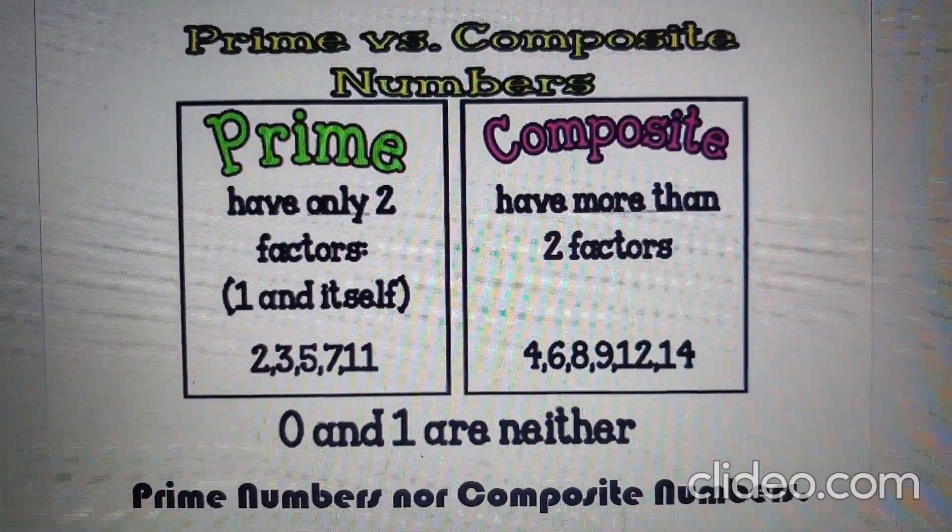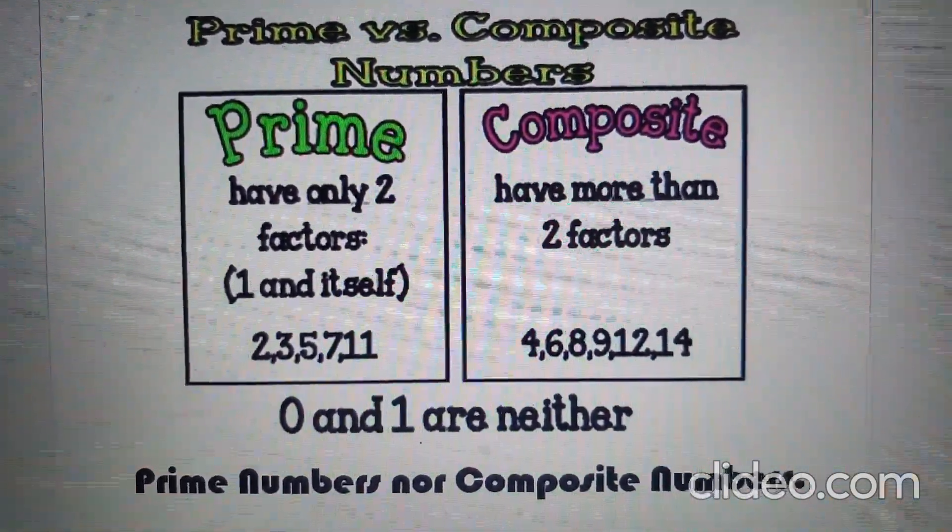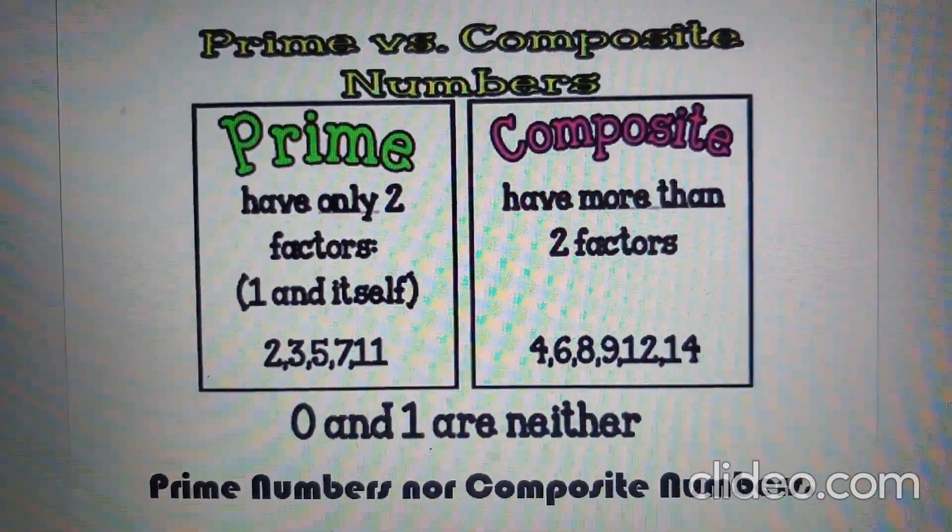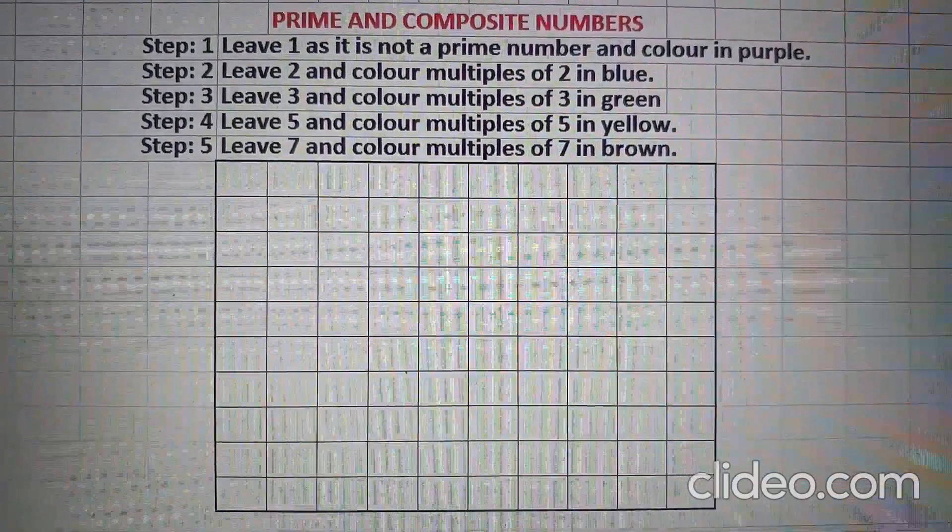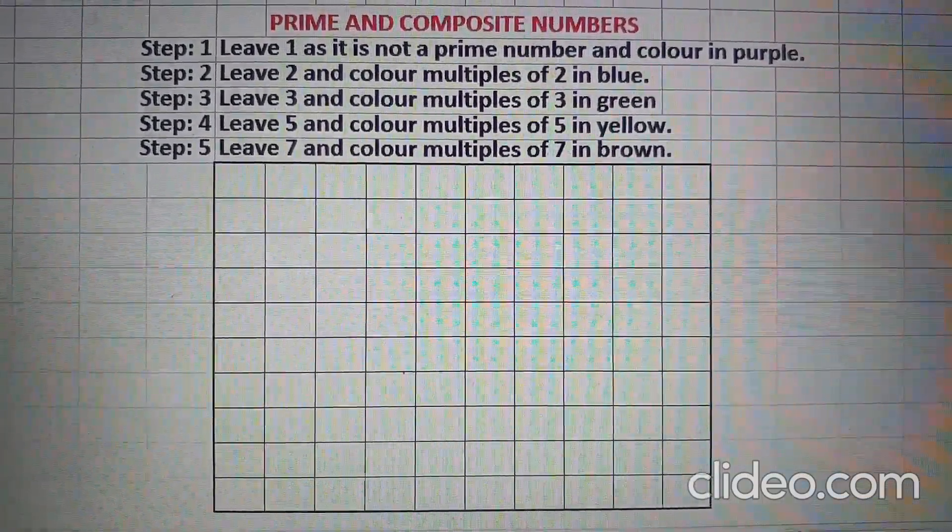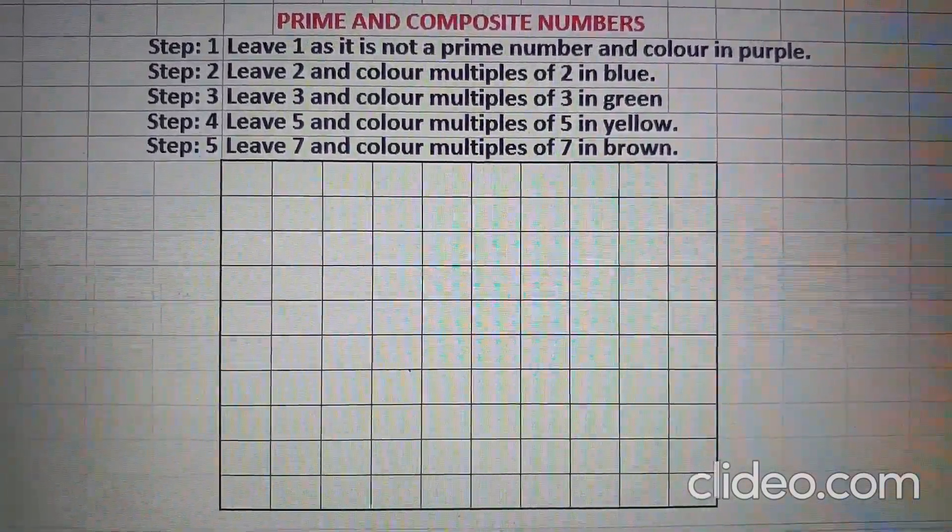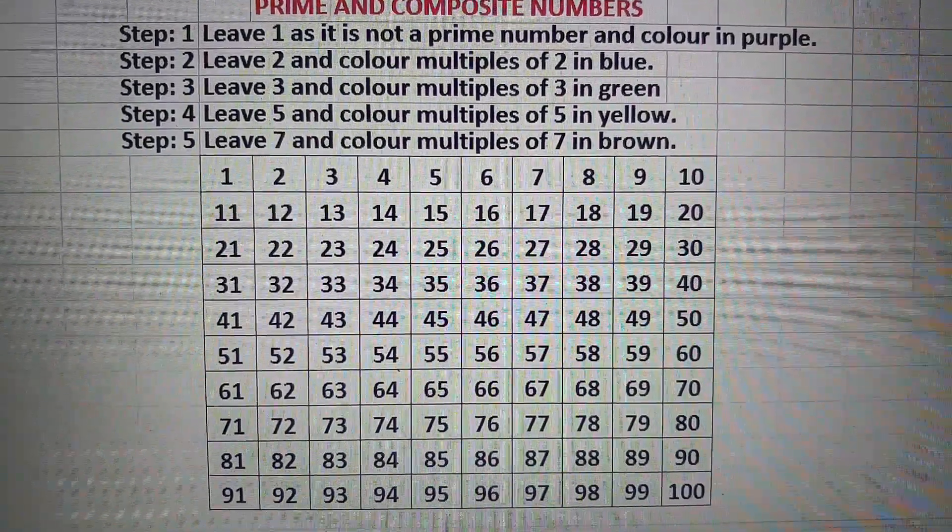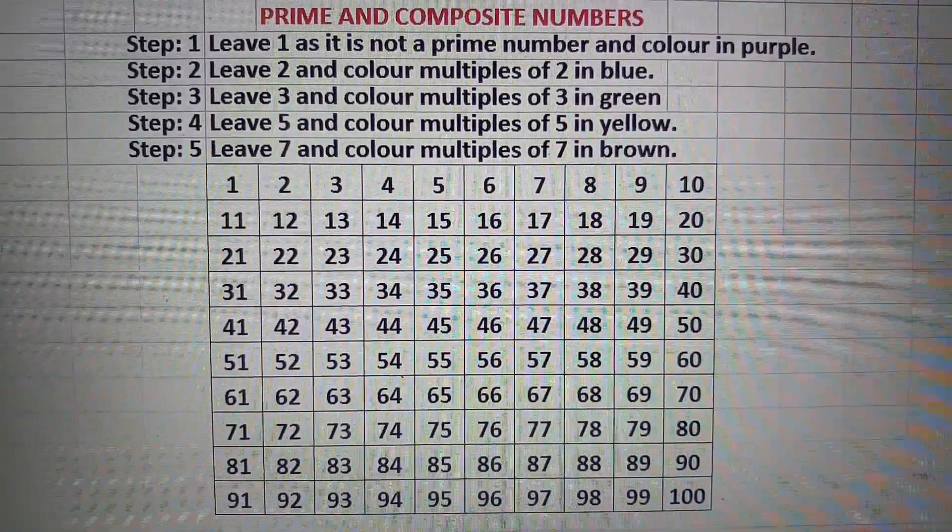We have learned that prime numbers have only two factors and composite numbers have more than two factors. 0 and 1 are neither prime numbers nor composite numbers. To find out prime numbers between 1 and 100, we will make a grid and write 1 to 100 numbers in it. Now we will follow some steps. Step 1 is leave 1 as it is not a prime number and color in purple.